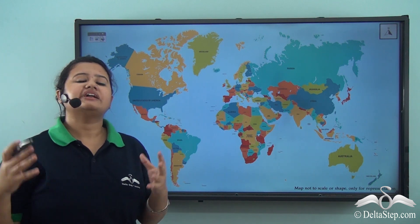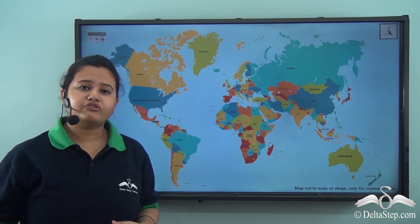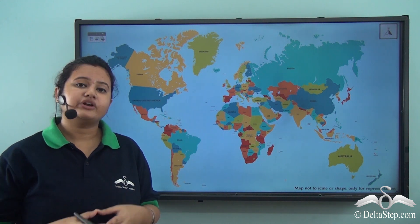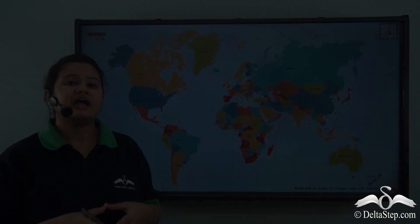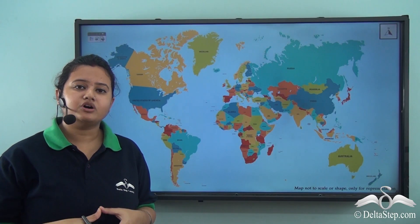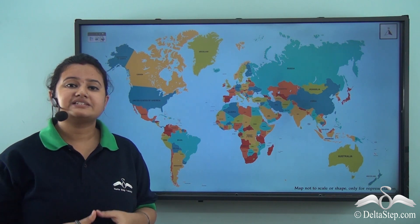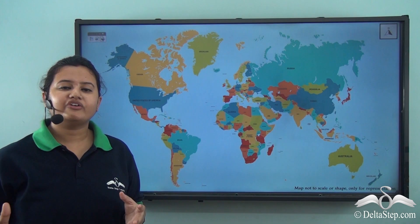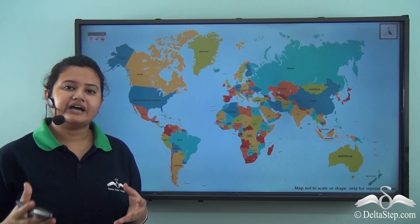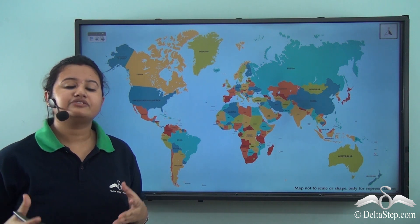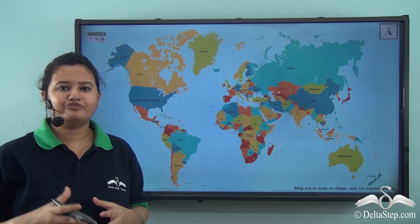Maps are indeed very helpful. They provide us a lot of information about a place — for example, defining the physical and geographical features of a place, as well as helping us know about political divisions like countries, cities, and states. Apart from providing information, maps also help us in finding directions and routes to different places, for instance Google Maps.